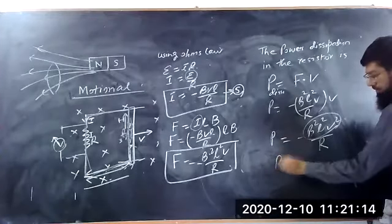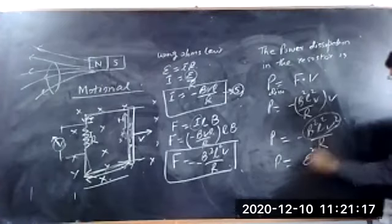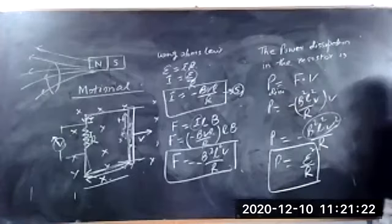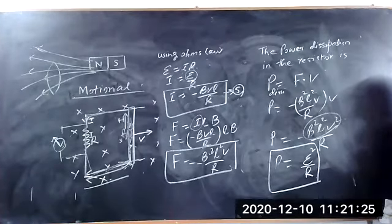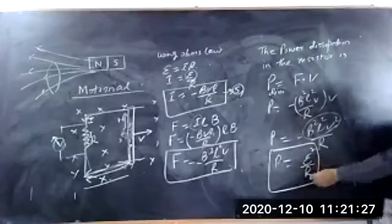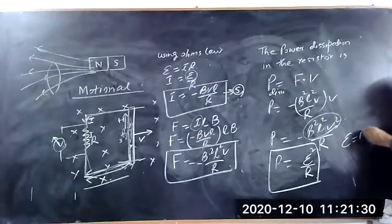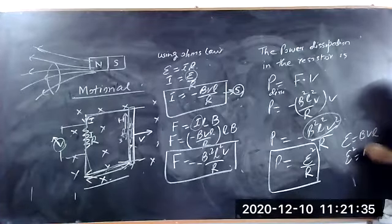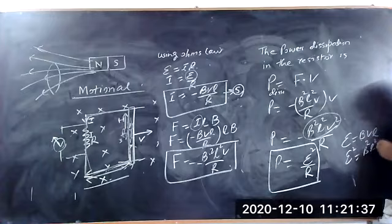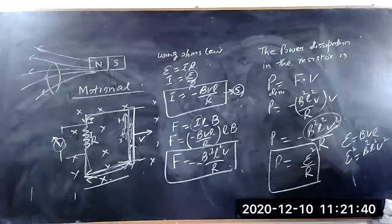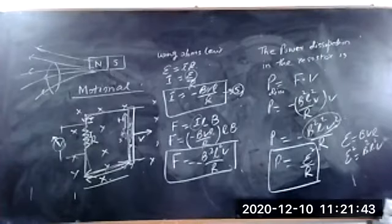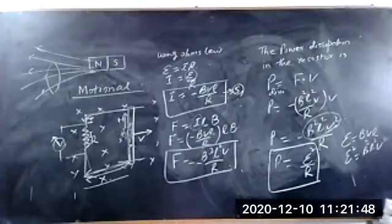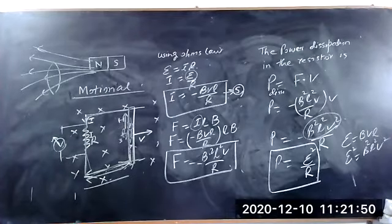Therefore, power is equal to E squared upon R. This is the power dissipation in the resistor, because EMF E is equal to BVL, and so E squared is equal to B squared L squared V squared. This is known as the power dissipation, and we call the EMF induced due to motion the motional EMF.